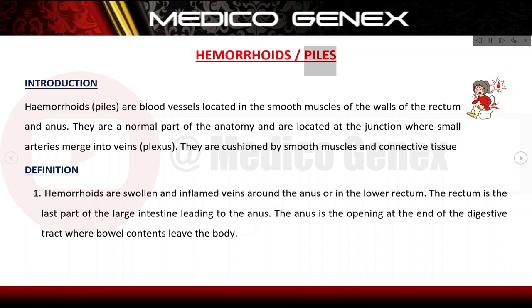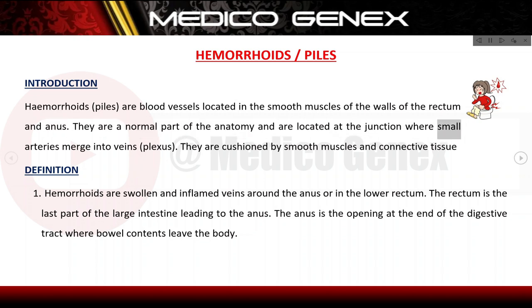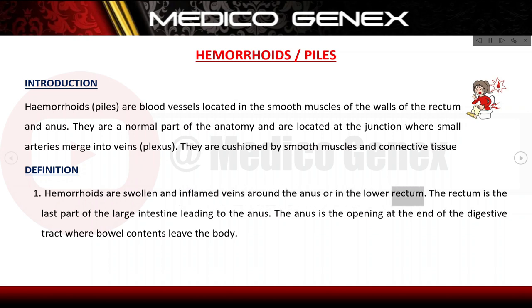Haemorrhoids, or piles, are blood vessels located in the smooth muscles of the walls of the rectum and anus. They are a normal part of the anatomy, located at the junction where small arteries merge into veins. They are cushioned by smooth muscles and connective tissue. Haemorrhoids are defined as swollen and inflamed veins around the anus or in the lower rectum.